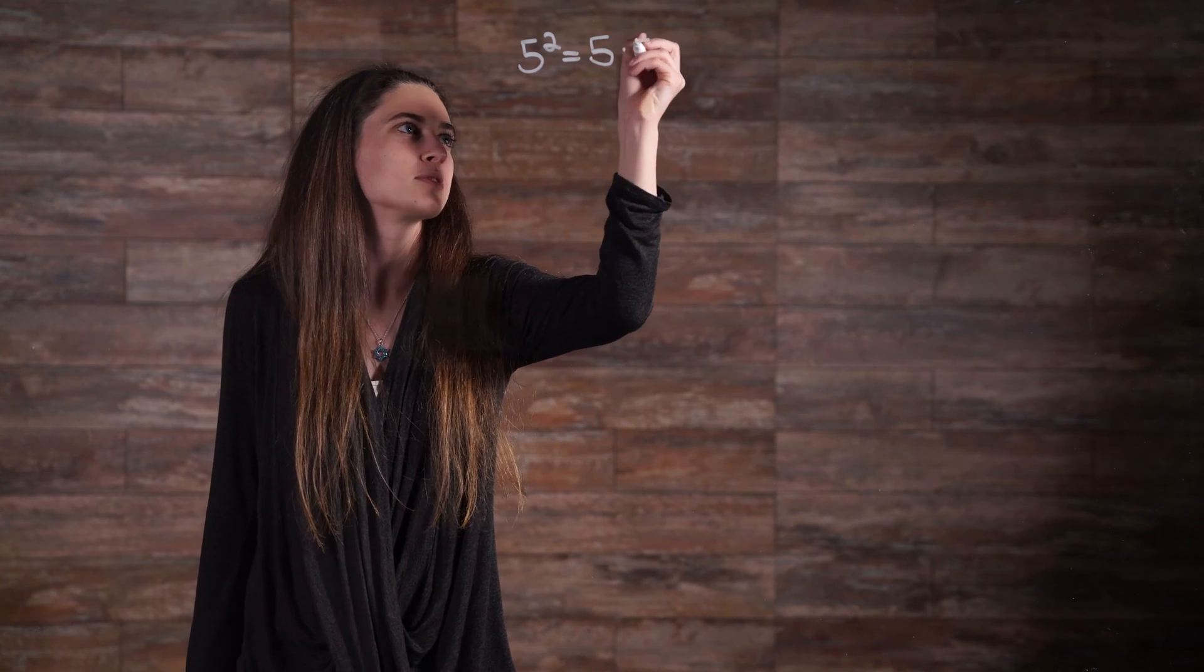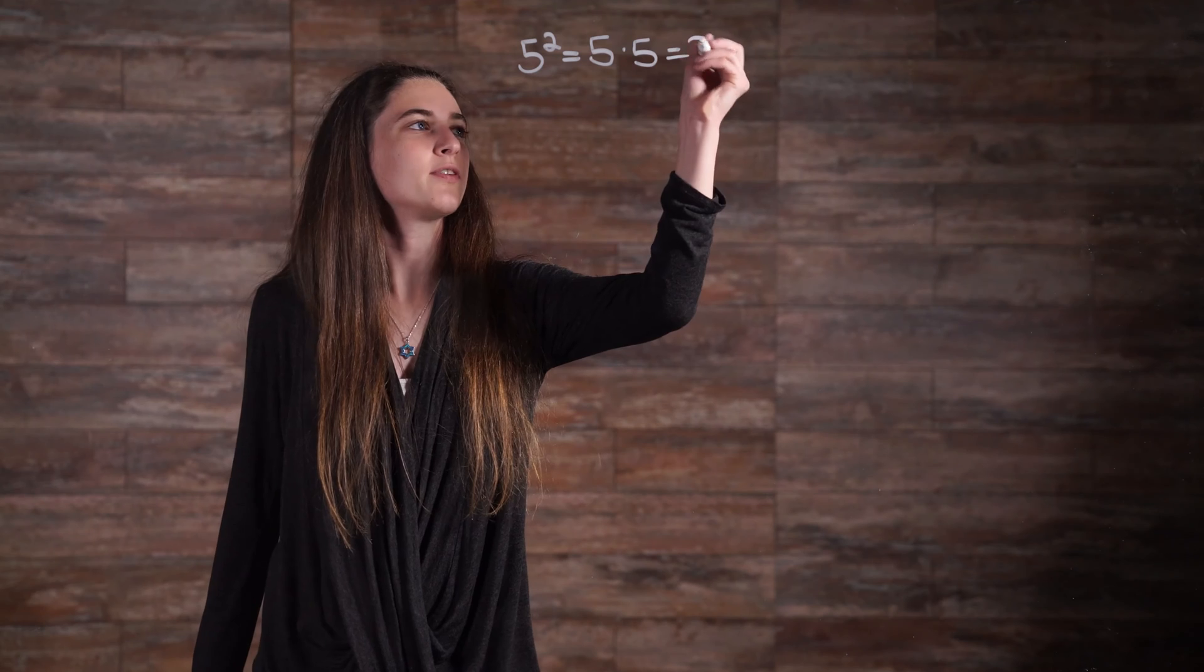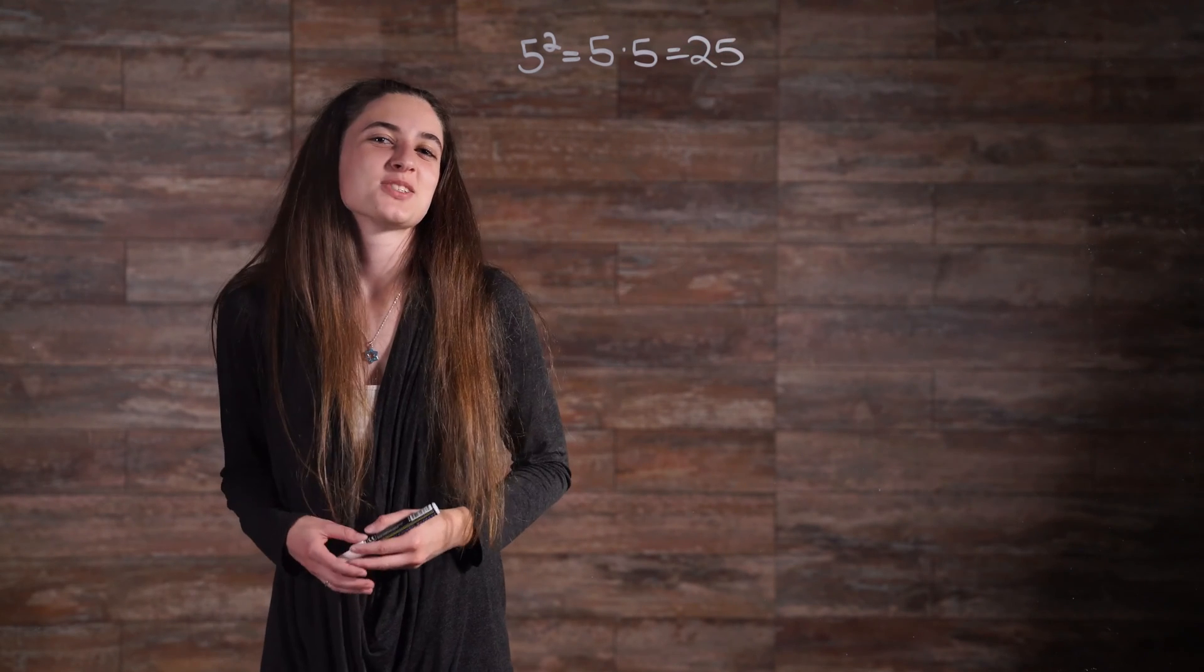5 squared equals 5 times 5. This can then easily be evaluated as 25. Let's look at some more examples.